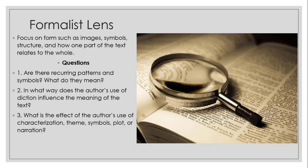For the Formalist Lens, we would focus on the forms such as images, symbols, structure, and how one part of the text relates to the whole. Some questions we would ask: Are there recurring patterns and symbols and what do they mean? In what way does the author's use of diction influence the meaning of the text? And what is the effect of the author's use of characterization, theme, symbols, plot, or narration? So here we would look at symbols. Let's pick out one — how about the lamb? What could the lamb symbolize? What could that lamb mean? These are questions you would answer in a Formalist Critical Lens interpretation.